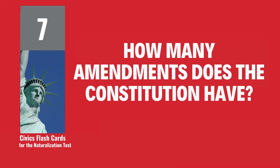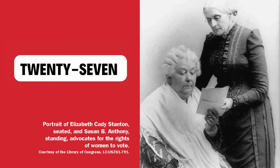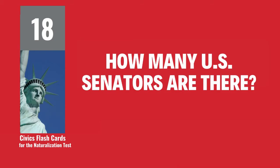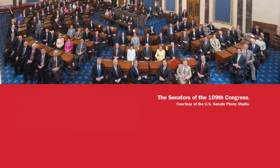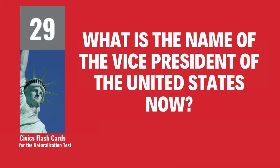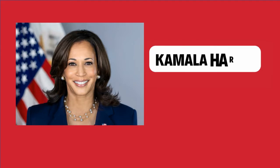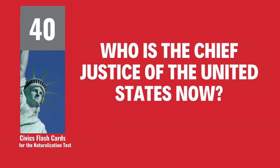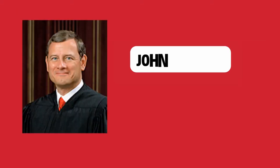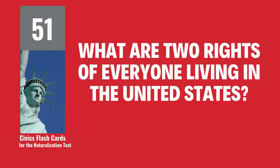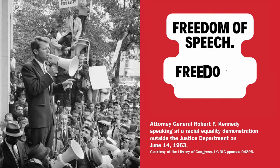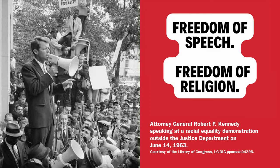How many amendments does the Constitution have? 27. How many U.S. senators are there? 100. What is the name of the Vice President of the United States now? Kamala Harris. Who is the Chief Justice of the United States now? John Roberts. What are two rights of everyone living in the United States? Freedom of speech, freedom of religion.